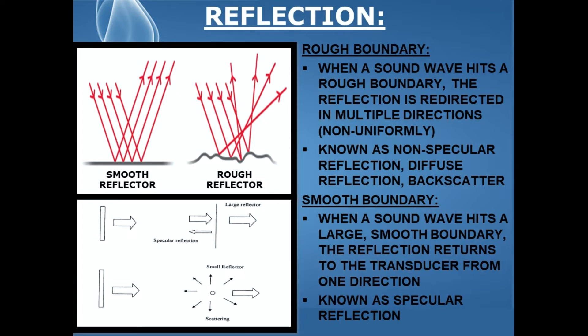When a sound wave encounters a smooth boundary — and note that this is also a large boundary, meaning it's larger than the wavelength — the reflection returns to the transducer from one direction, and this is known as specular reflection.